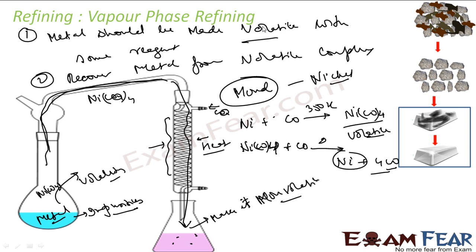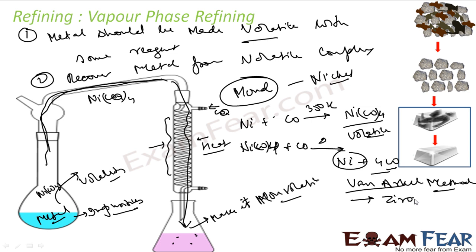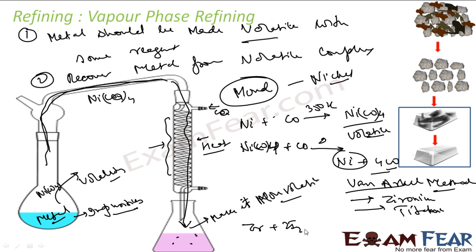Other metals like zirconium and titanium can also be refined using vapor phase refining. For these, we use the Van Arkel method, named in honor of its discoverer. In this method, zirconium is reacted with iodine to form zirconium tetraiodide, ZrI₄, which is volatile. This volatile compound is then heated, and you get back pure zirconium and iodine. The concept is the same as the Mond process; only the reagents differ.